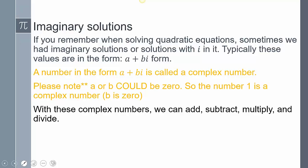If you remember when solving quadratic equations, sometimes we had imaginary solutions or solutions with i in it. Typically those values are in the form a + bi. A number in that form is called a complex number.